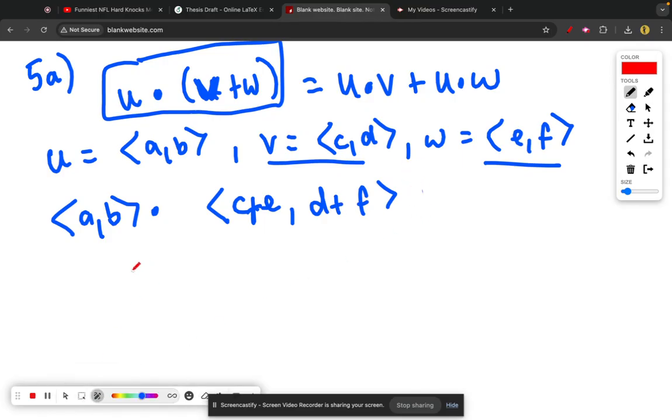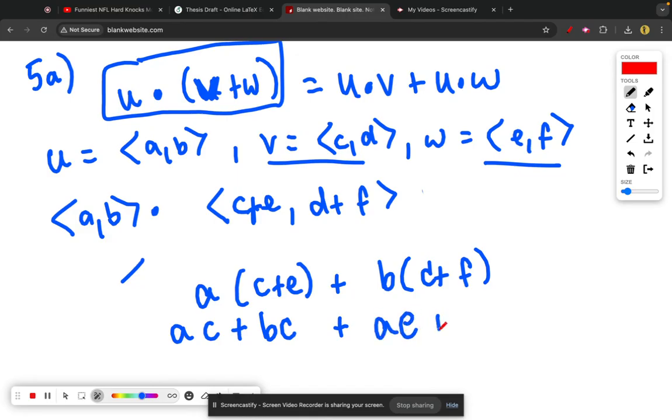take the dot product of these, then by definition what we end up getting is a(c+e) + b(d+f). And we can break this up as ac + bc, and then plus ae + bf.